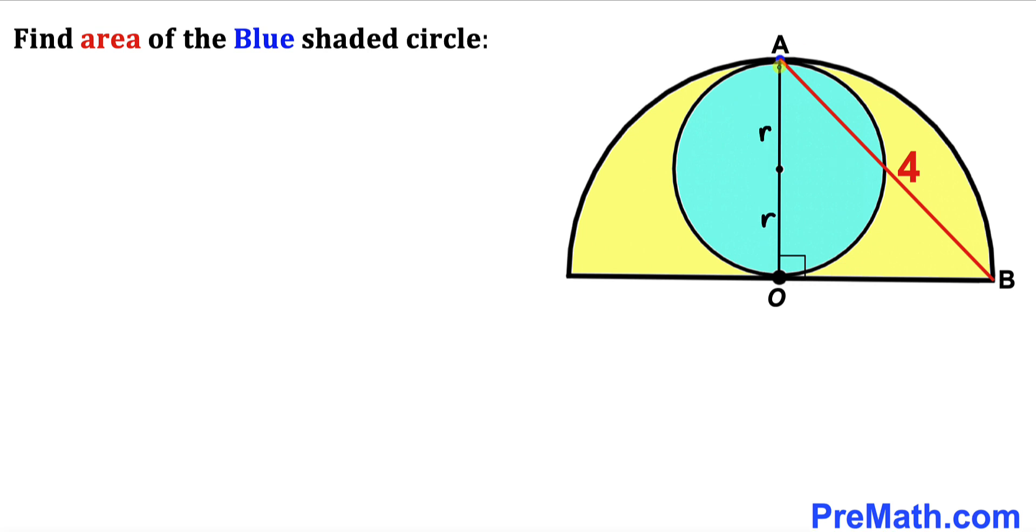Then this diameter AO is going to be r plus r, which is going to give us 2r.